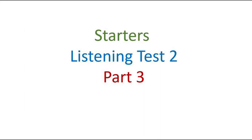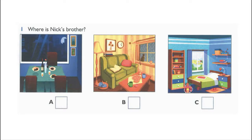Now listen to part 3 again. 1. Where is Nick's brother? Nick, where is your brother? I can't find him. Is he in the dining room? No, he's not in the dining room. And he's not in the living room. Oh, here he is. He's in the bedroom. He's sleeping.